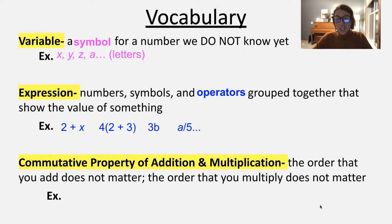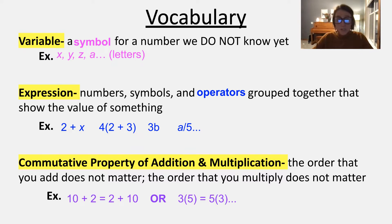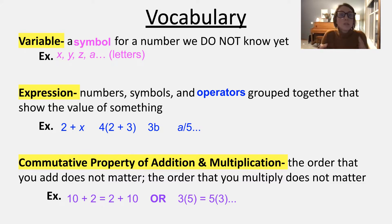Commutative property of addition and multiplication — this is a really nice property to recall. It says the order that you add does not matter, and the order that you multiply does not matter. For example, 10 plus 2 is the same as 2 plus 10 — exact same sum. Three times 5 is the exact same product as 5 times 3. The two numbers just change spots. It doesn't matter the order you're adding or multiplying; you'll get the same sum or product.